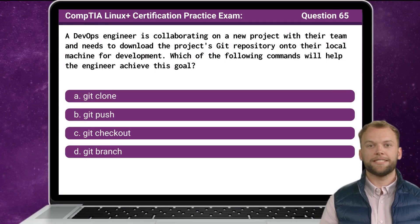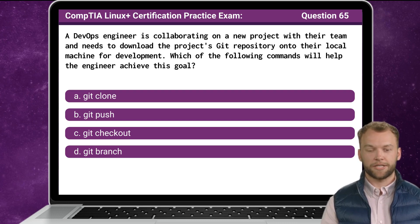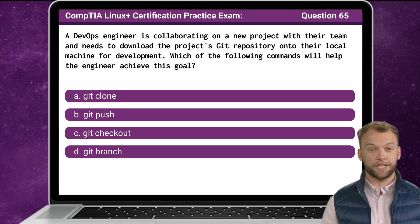Question 65. A DevOps engineer is collaborating on a new project with their team and needs to download the project's Git repository onto their local machine for development. Which of the following commands will help the engineer achieve this goal?